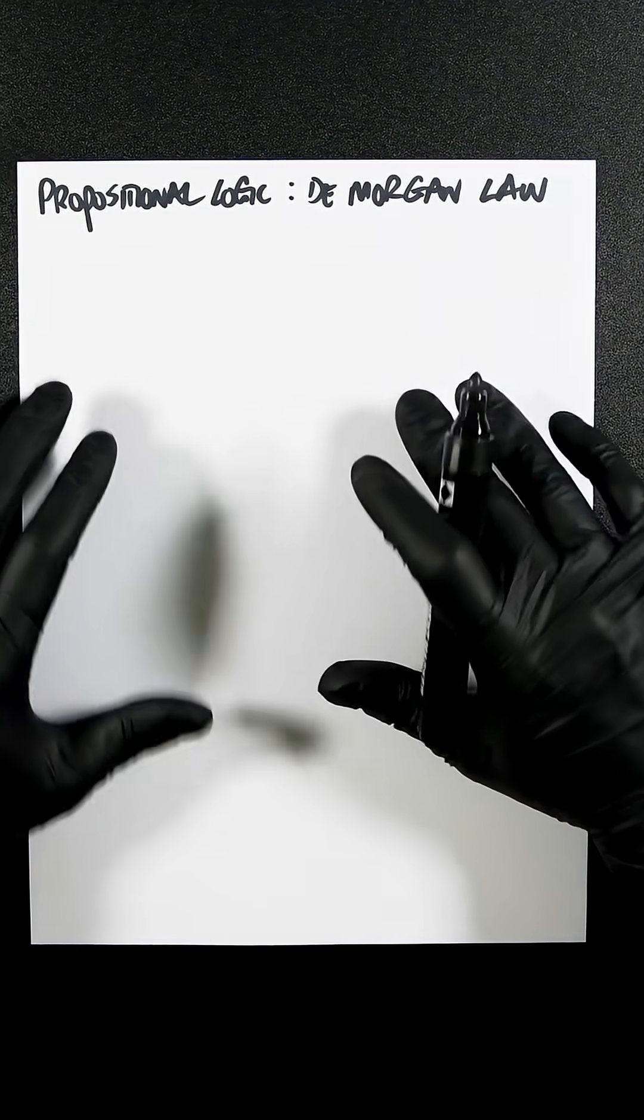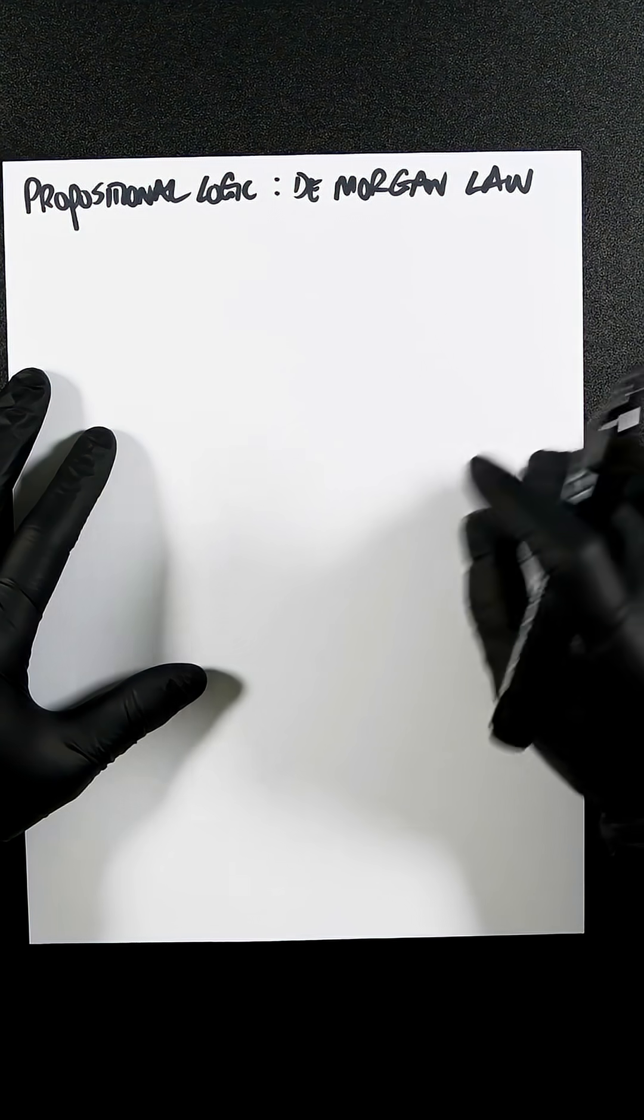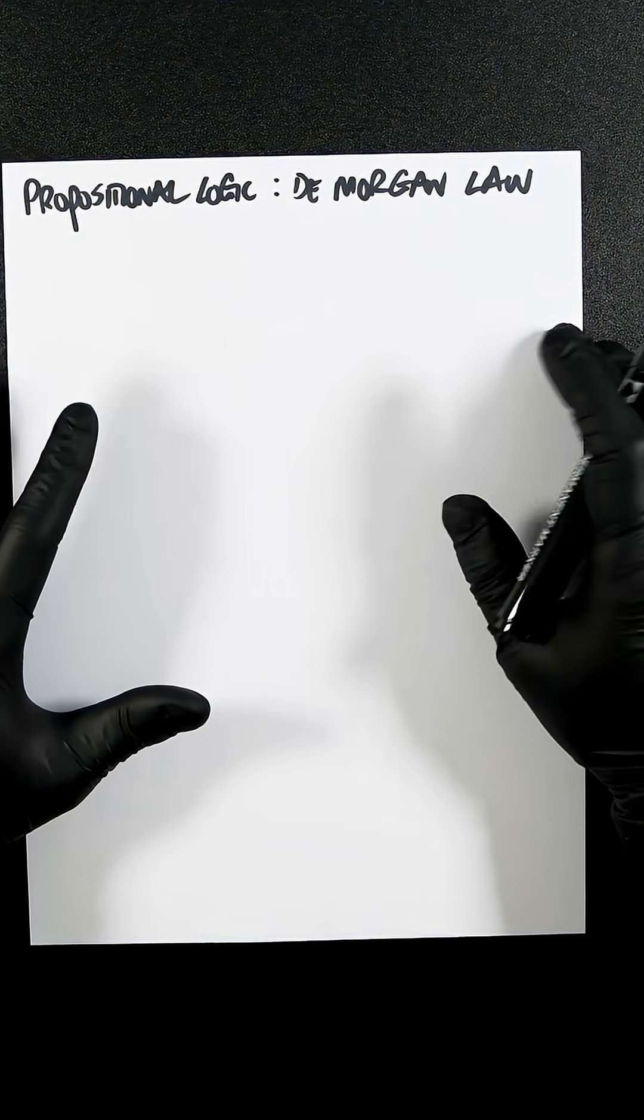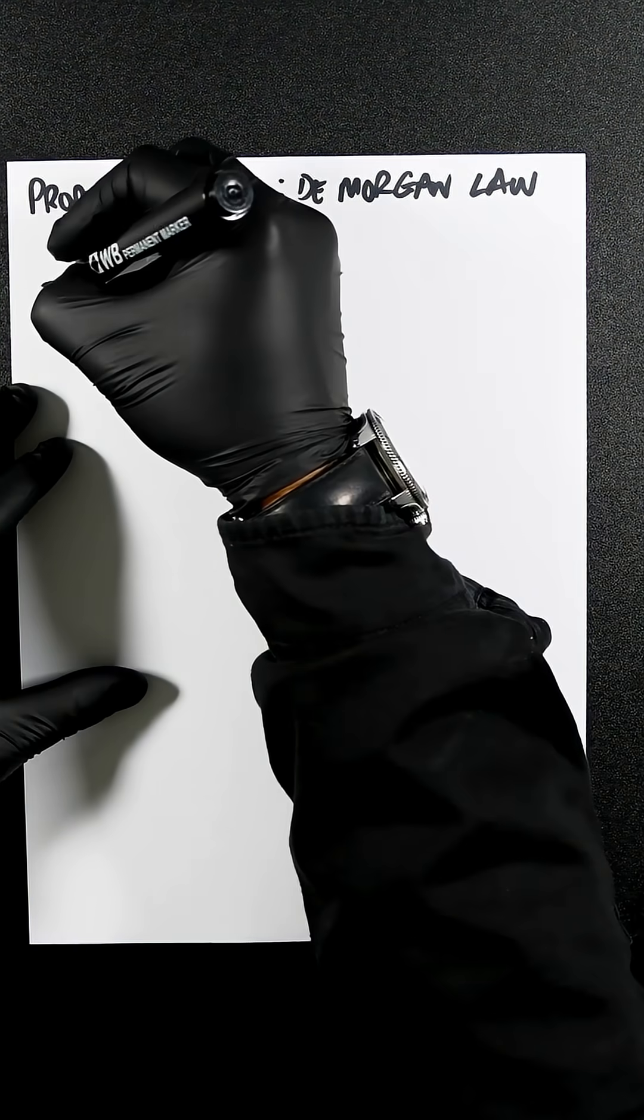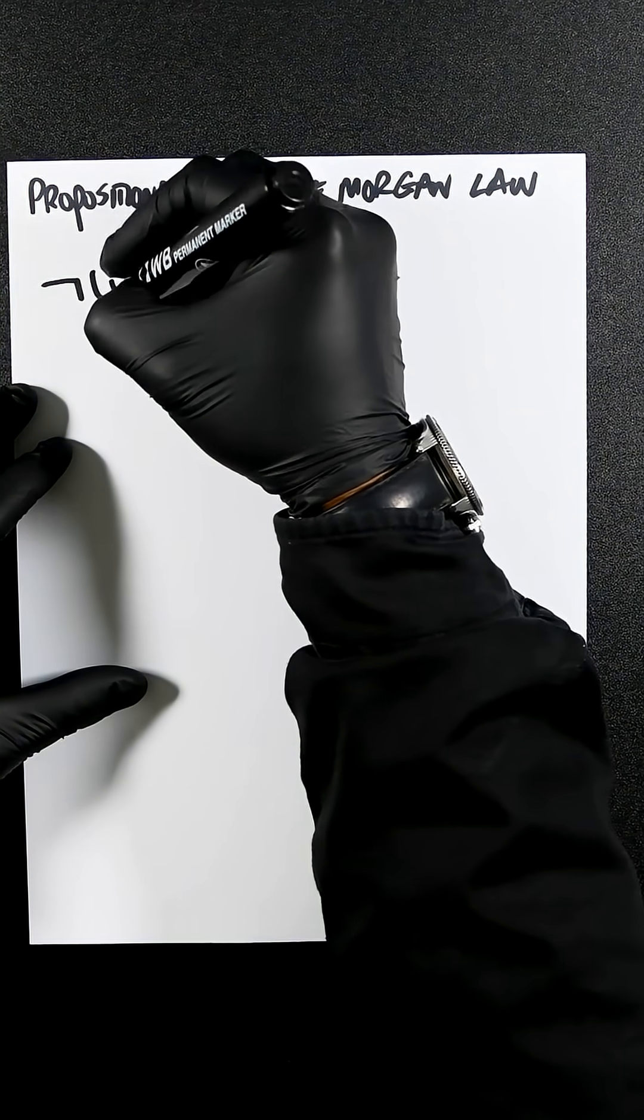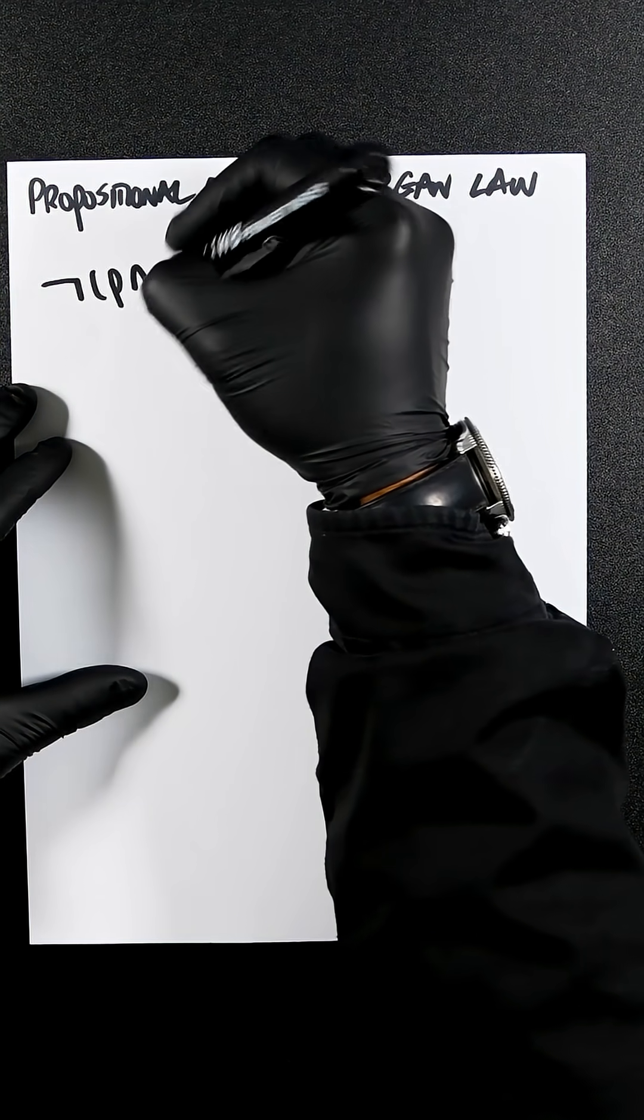It's basically the law or theory of how negations distribute over a conjunction, which is an and, or a disjunction, which is an or. So if I have not(P and Q),